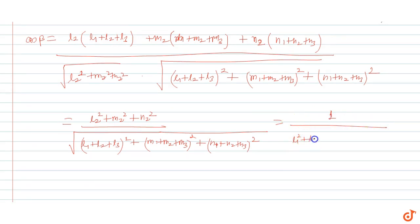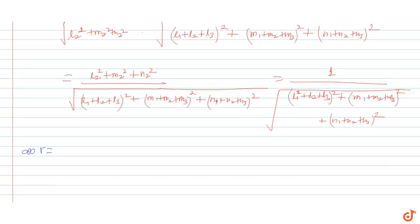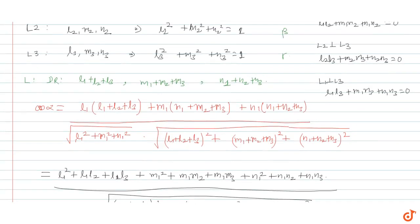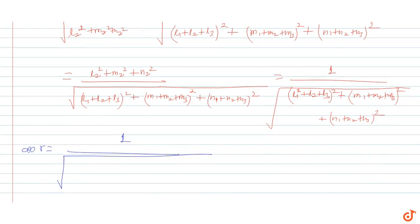So cos alpha and cos beta are equal. Similarly, if we find cos gamma by taking the dot product of L3's direction cosines with line L's direction ratios, the value also comes out to be 1 upon square root of (L1 plus L2 plus L3) square plus (M1 plus M2 plus M3) square plus (N1 plus N2 plus N3) square. Therefore cos alpha equals cos beta equals cos gamma, which proves that the line makes equal angles with each of the three mutually perpendicular lines.